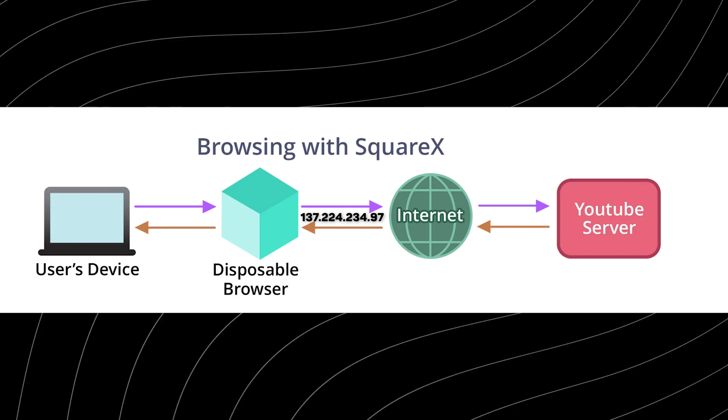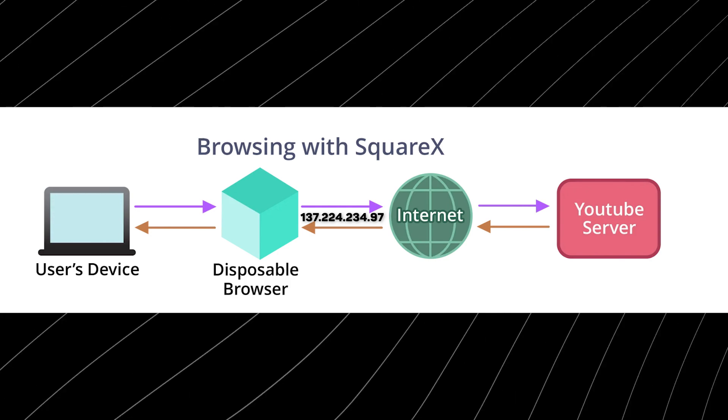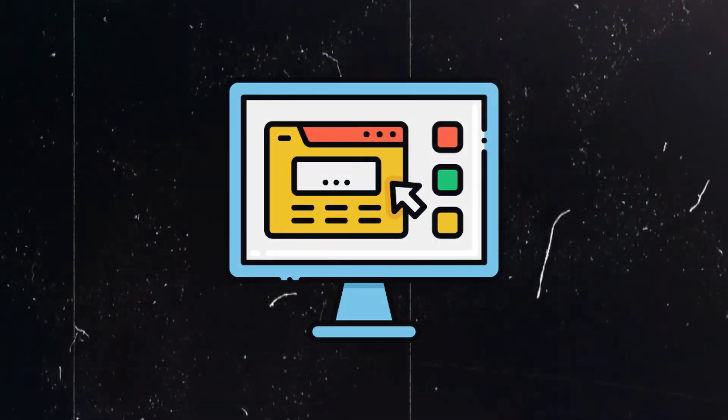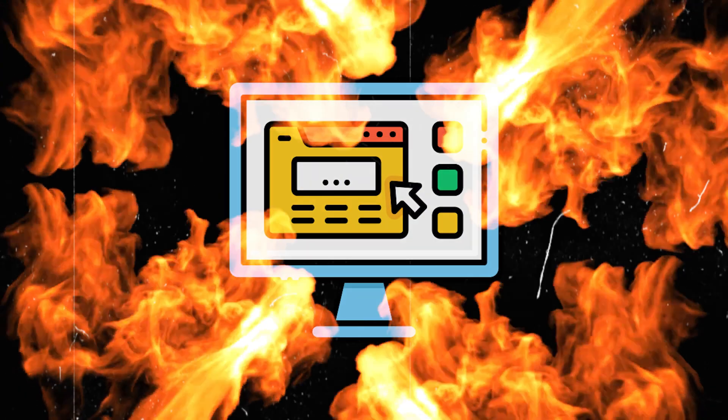Every time you open a disposable browser in a different country, it comes with an IP address from that country. This dynamic allocation stops trackers in their tracks, preventing them from profiling your online movements across sessions. And when you're done, every trace of your session — cookies, history, and more — is completely wiped out. There is no residue, no lingering data for trackers to exploit.